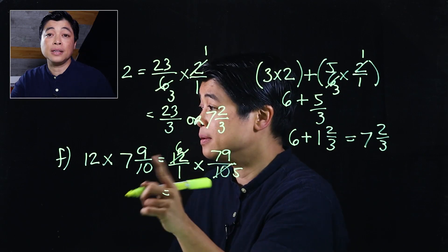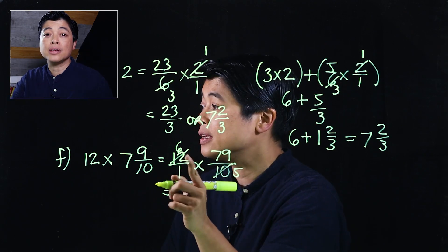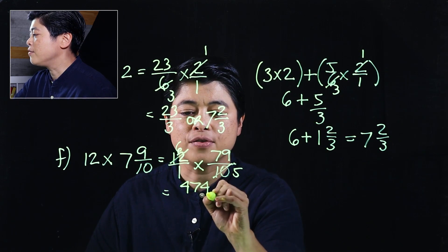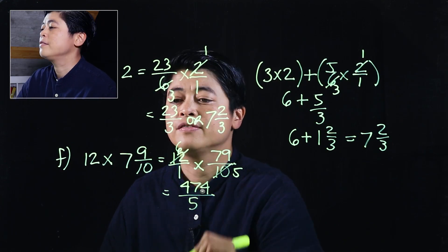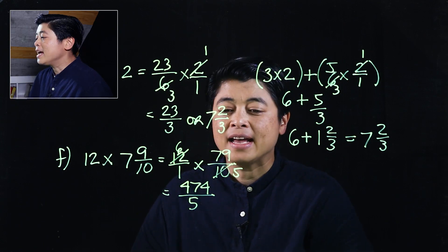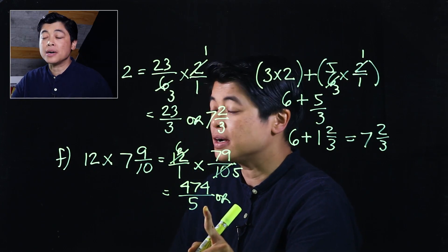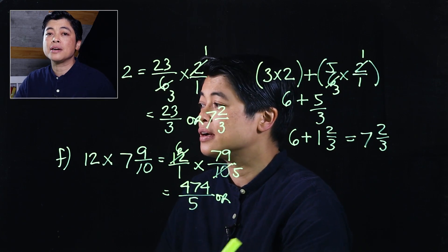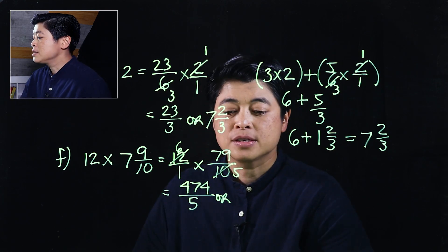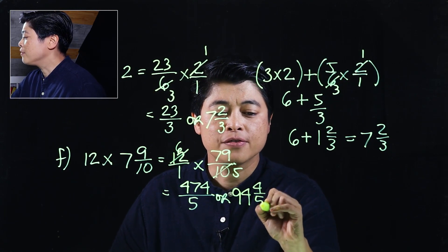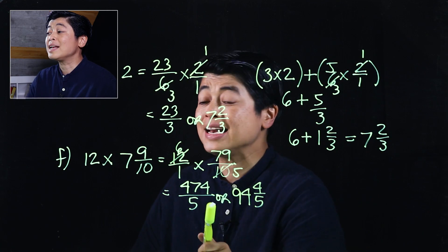So this is where it becomes stressful because we need to multiply that out. If we use our calc we would have gotten 474 divided by 5. And if we want to put it into a mixed number we divide, the remainder will be the fraction. So that means when we divide we should get 94 and 4 fifth.